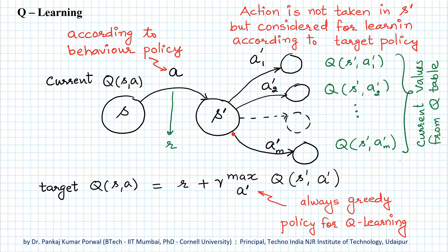An important thing to note here is that the agent does not actually take any of these actions. The agent only considers these actions for learning, and for learning it chooses one of these actions according to the target policy. For Q-Learning, that target policy is always the greedy policy. So the Q-Learning agent will choose the action in state S' for which the action value is maximum, and use that to calculate the target action value for updating the Q-value.